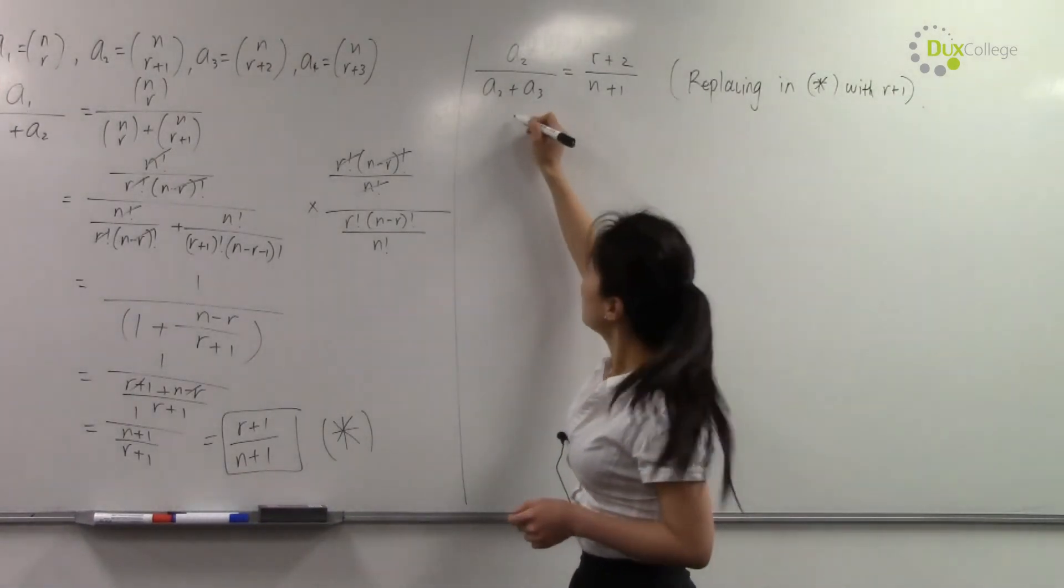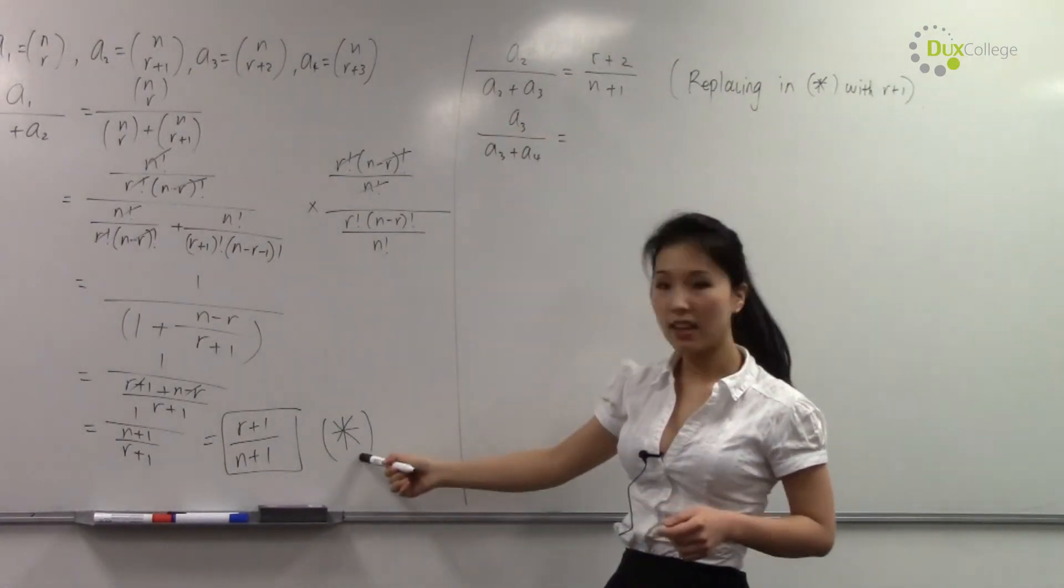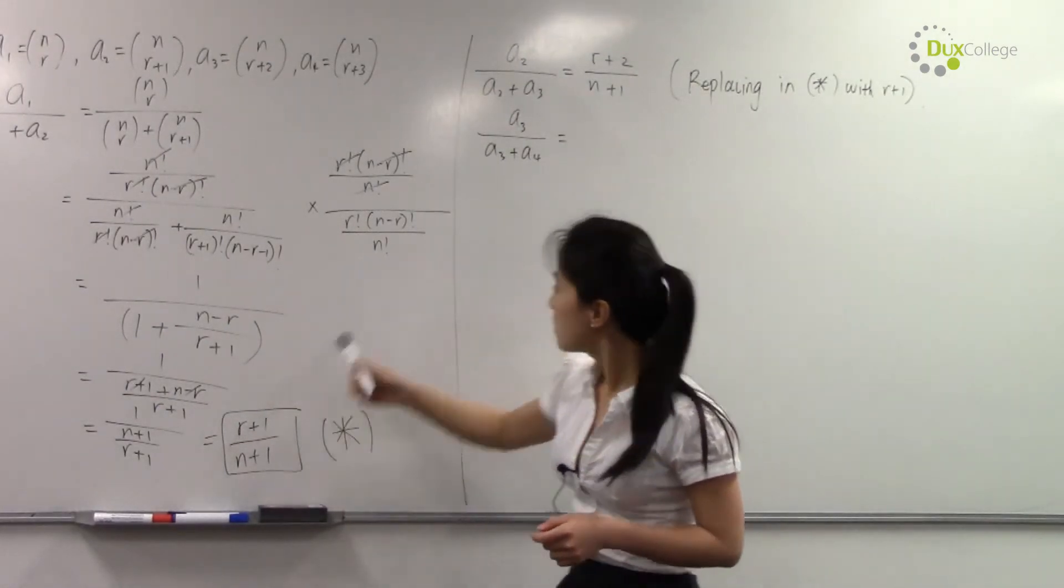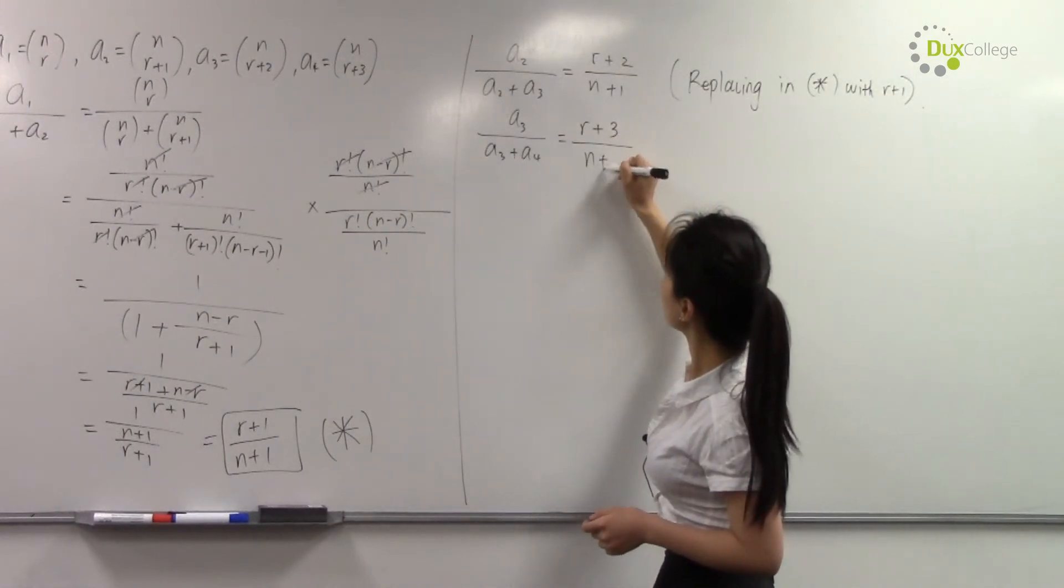And similarly, with a₃ over a₃ plus a₄, we are replacing again this expression in star where r you're replacing with r+2. So you get (r+3) over (n+1).